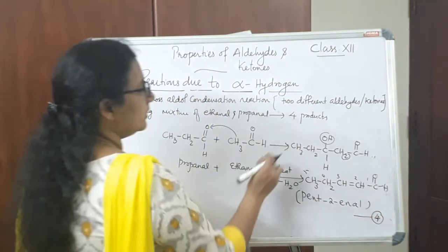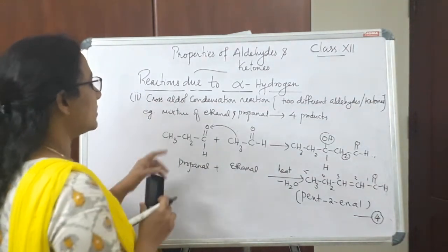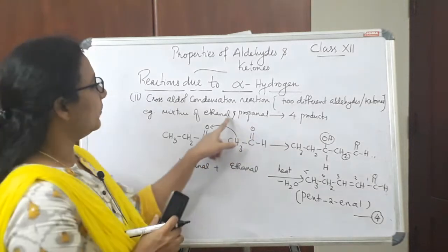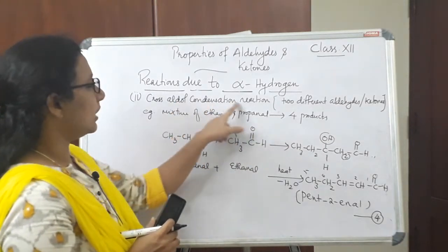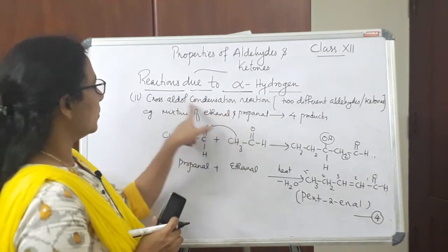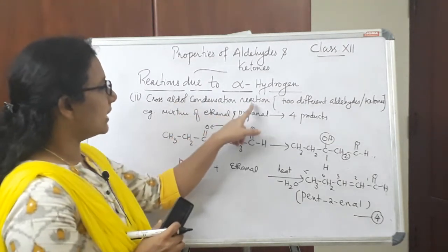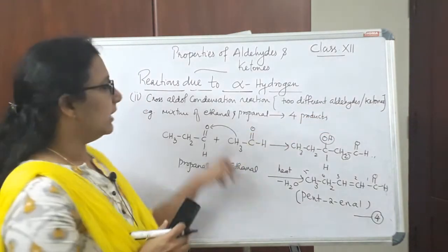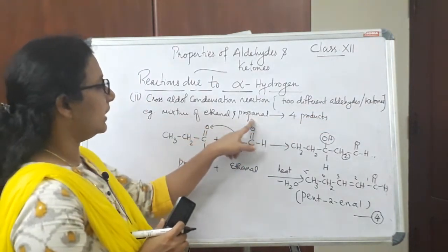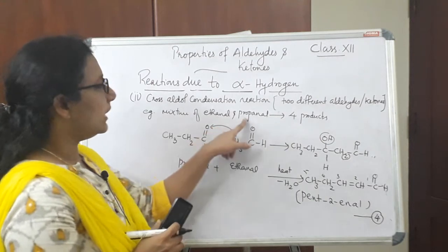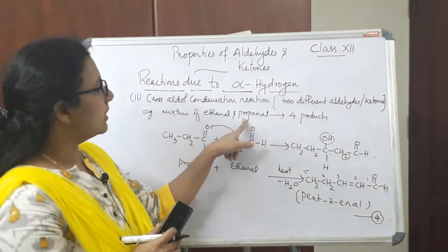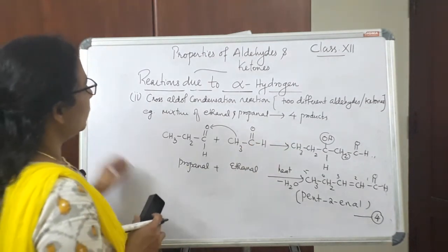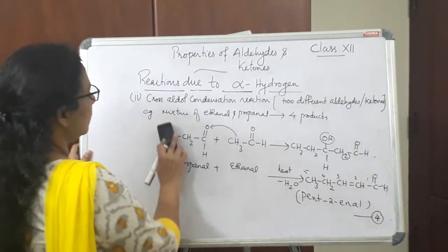So there are four products in the case of a mixture of ethanal and propanal where cross aldol condensation reaction is expected. Cross aldol condensation reaction is expected when two different aldehydes or ketones are taken. Here both have alpha hydrogen atoms, giving four products. Now let us see one example with a ketone as well.